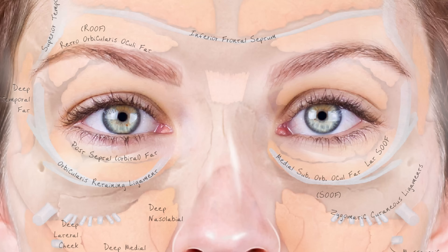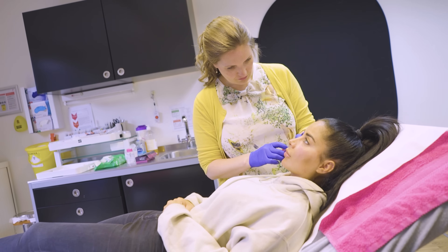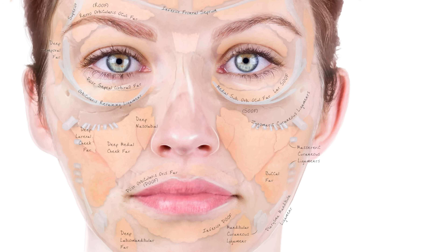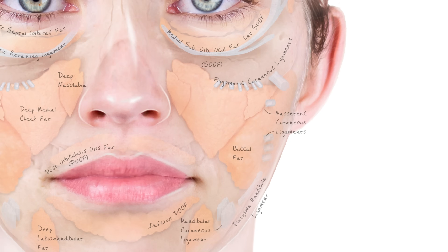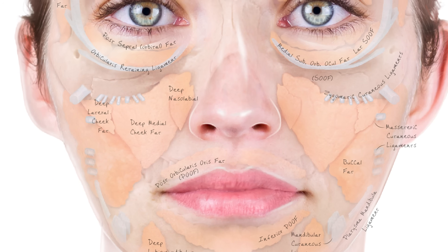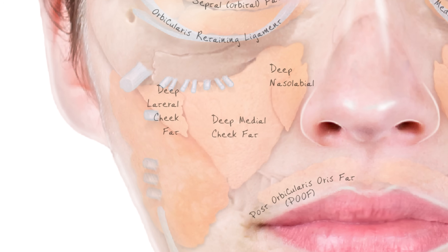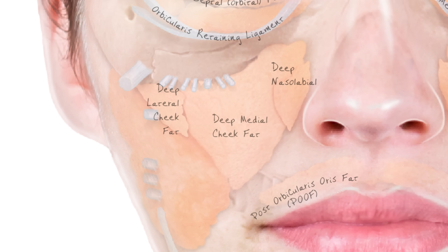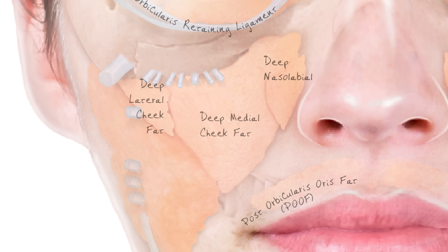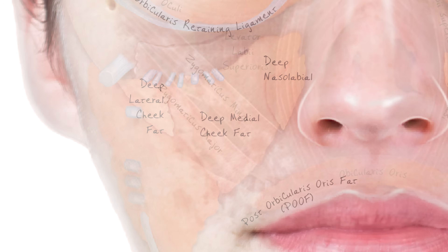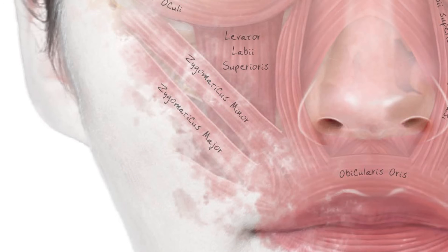Around the eyes, we're mainly talking about the SOOF — the suborbicularis oculi fat pad — which is divided into two: the lateral and the medial SOOF. This is very important for tear trough; effectively, this is what we are restoring when we treat the tear trough. In the midface, things are more complex. Most internet images show two main fat pads: the buccal fat pad, which extends all the way underneath the zygoma into the temple, and the deep medial cheek fat pad. More detailed descriptions also include the deep lateral cheek fat pad and the deep nasolabial fat compartment in the pre-maxillary space, which lies on top of the levator labii superioris alaeque nasi muscle. It's important to understand that in the midface, deep fat pads can lie on top of muscles because of this roof-tile effect.